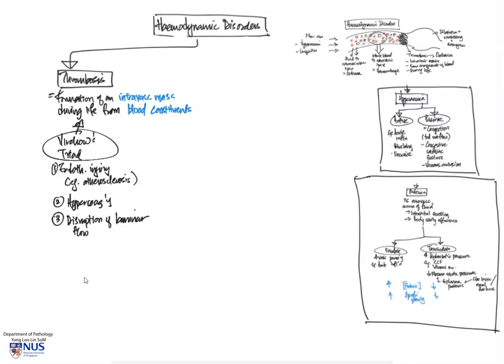And for aneurysm, we have mentioned it earlier. This is a dilatation of the blood vessel, and this gives rise to some degree of turbulence, or in other words, disruption of the laminar blood flow.